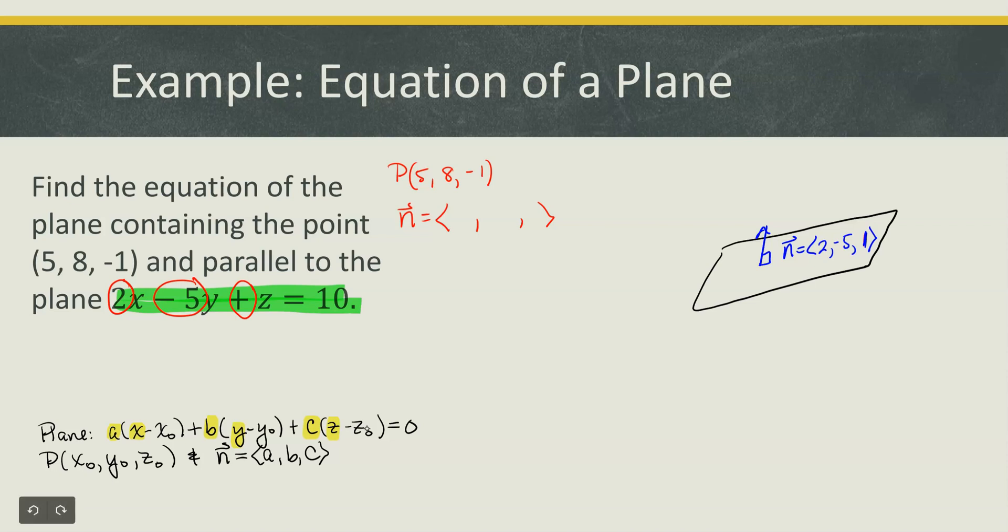Now we want to create the equation of a new plane and that plane is to be parallel to the existing. So if the two planes are parallel then the normal vectors should be parallel. So this new plane should have a normal vector that points in the same direction as this original normal vector, otherwise the planes will not be parallel.